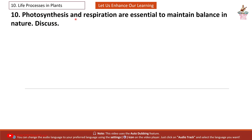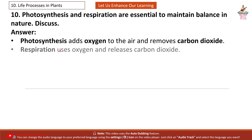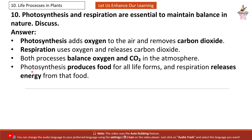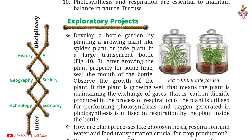Question 10: Photosynthesis and respiration are essential to maintain balance in nature. Discuss. Answer: Photosynthesis adds oxygen to the air and removes carbon dioxide. Respiration uses oxygen and releases carbon dioxide. Both processes balance oxygen and CO2 in the atmosphere. Photosynthesis produces food for all life forms and respiration releases energy from that food. Together they maintain the balance of life on earth.